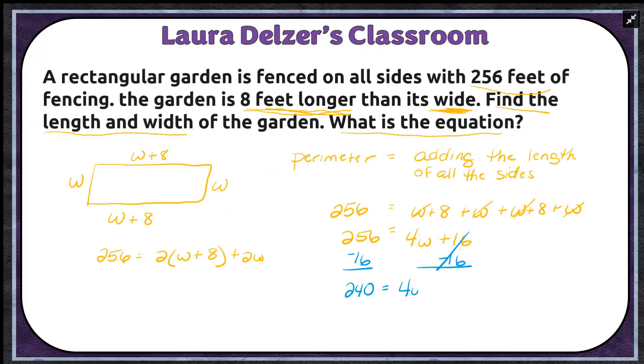And so that cancels. 256 minus 16 is going to give me 240 equals 4w. And then now I can do my next step. I have a 4 in front of that w, so I need to divide by 4 and divide by 4. That cancels. And so I'm going to get w equals 240 divided by 4, which is 60.